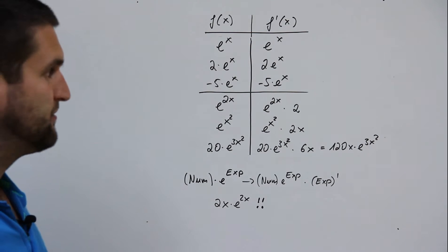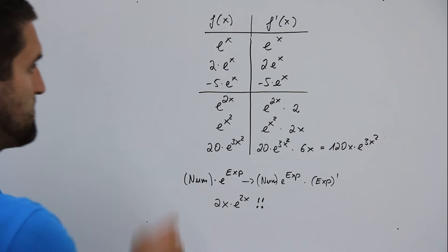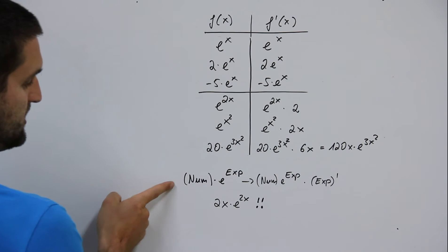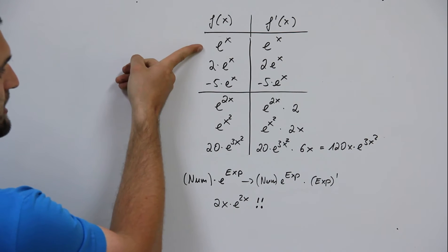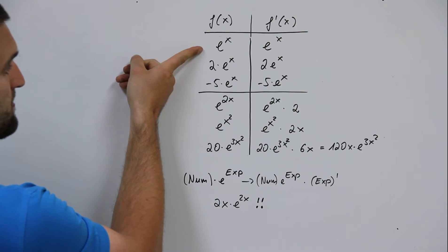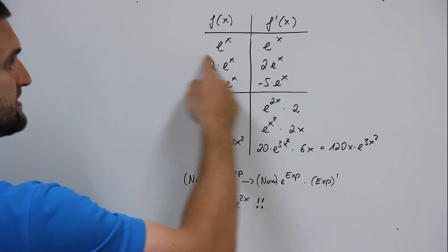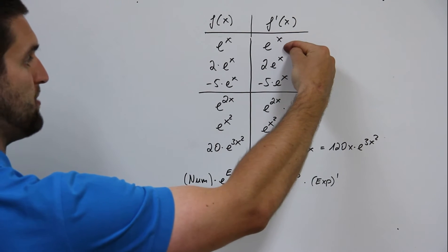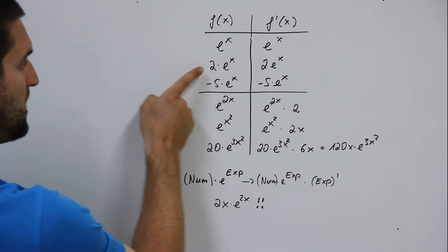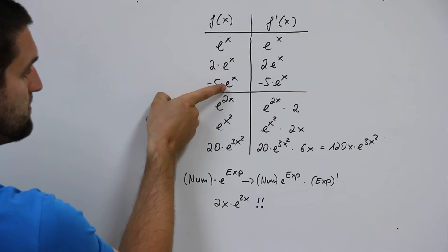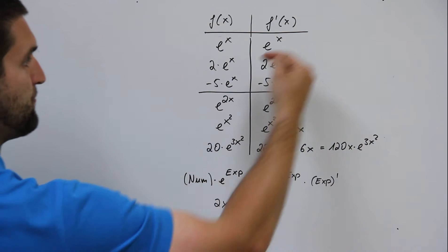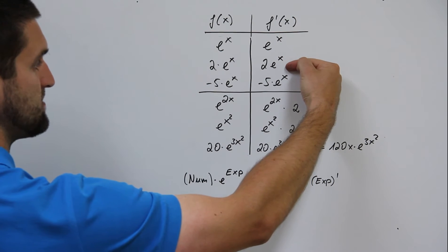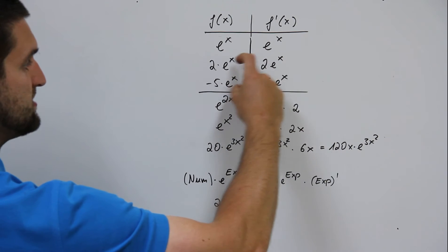The first derivative of e to the power x is easy — you will see it here. The fascinating thing is: the first derivative of e to the power x is e to the power x. A number times e to the power x — the first derivative is just the number times e to the power x.